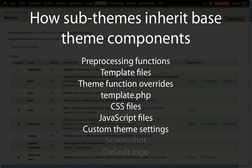Custom theme settings, like the one we created in a previous example where we added a sub-header to our theme, are not inherited into a sub-theme. So if we want our sub-theme to have those, we need to copy the theme settings.php file and any settings defined inside of the info file over to the sub-theme as well. This also includes any settings around the color module that allow individuals to change the color scheme of a template.